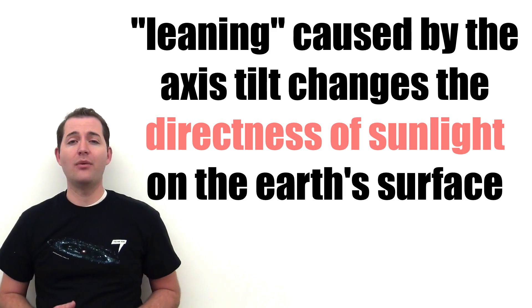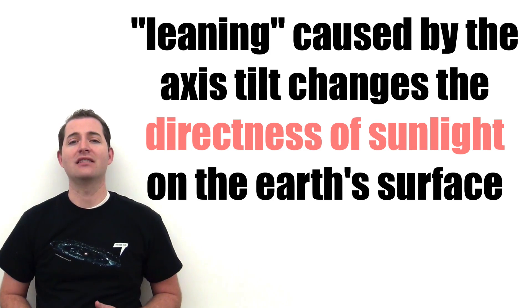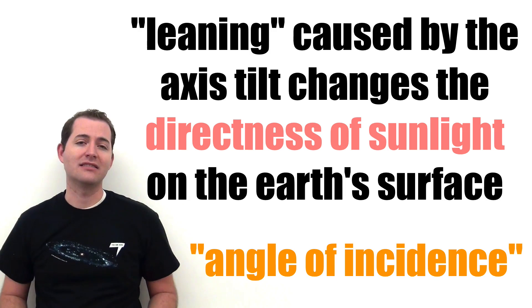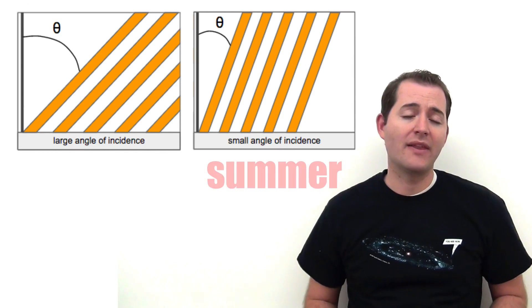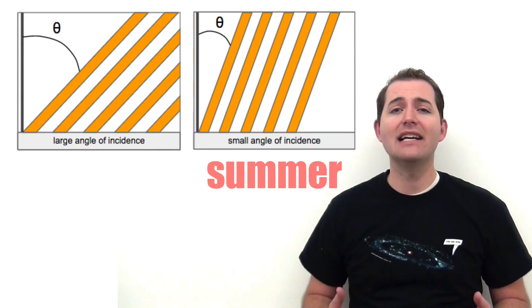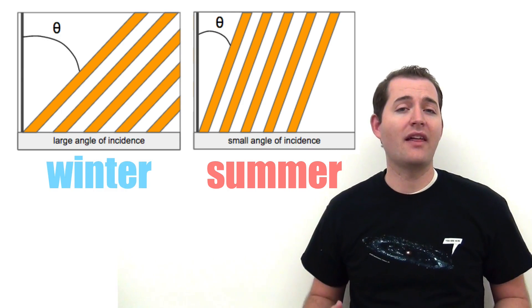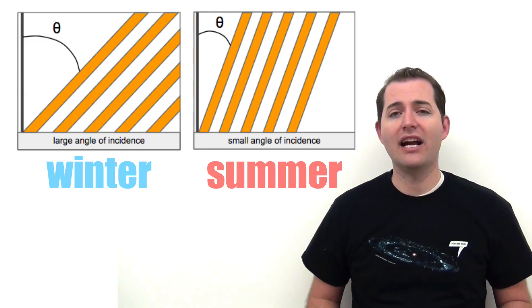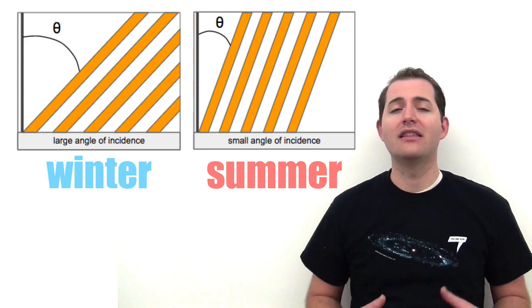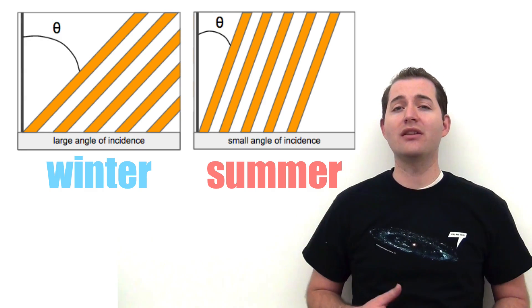This leaning toward or away from the Sun changes how directly sunlight hits the Earth's surface. This is also referred to as the angle of incidence — the angle at which sunlight hits the Earth's surface. During the summer, there is more direct sunlight hitting the surface and it is less spread out. During the winter, the sunlight is more indirect, spread out over a larger area, which explains why temperatures are generally lower during the winter months.